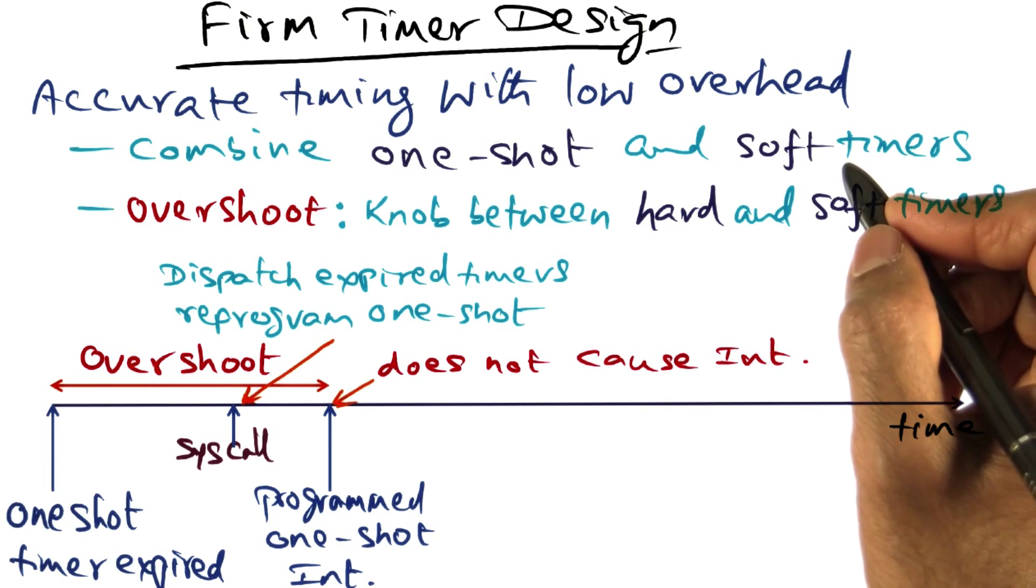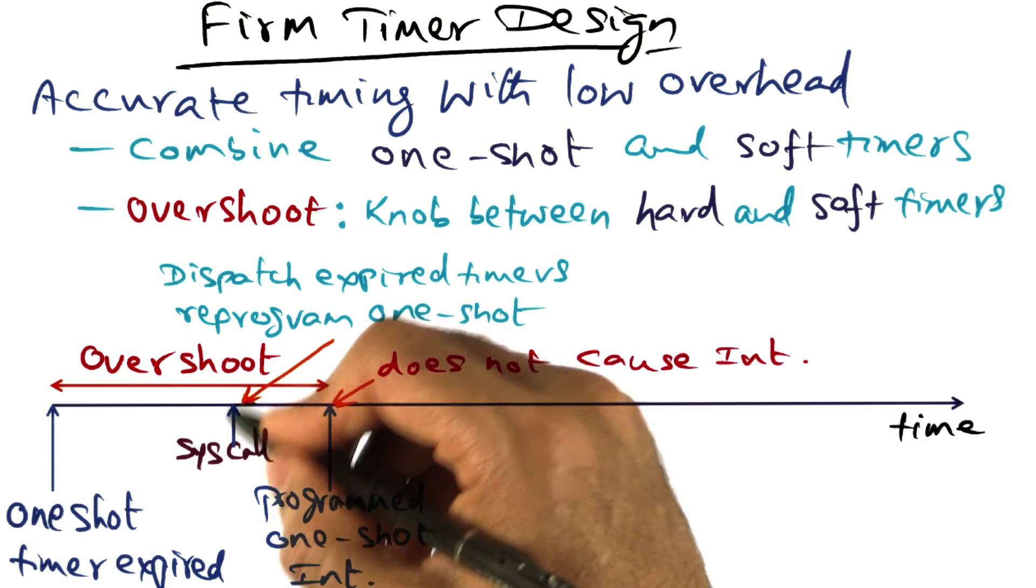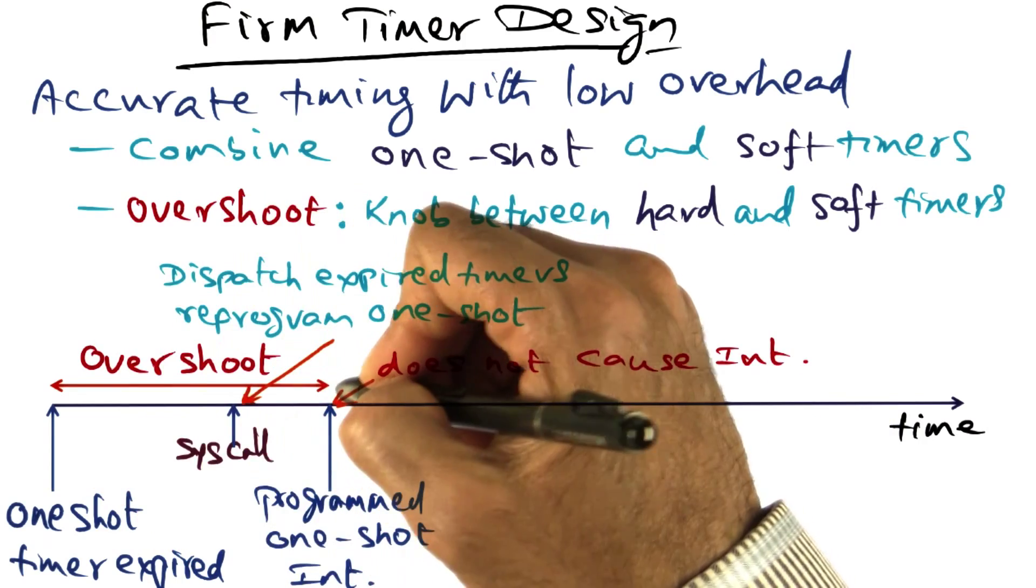But at the same time, we are avoiding the overhead associated with one shot timer by processing that interrupt using this overshoot parameter.